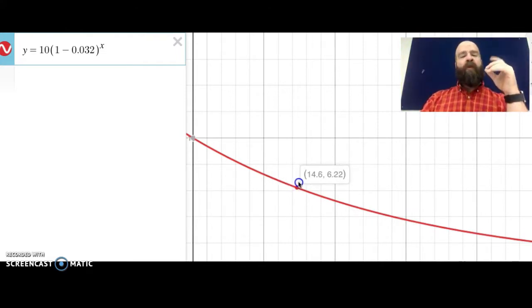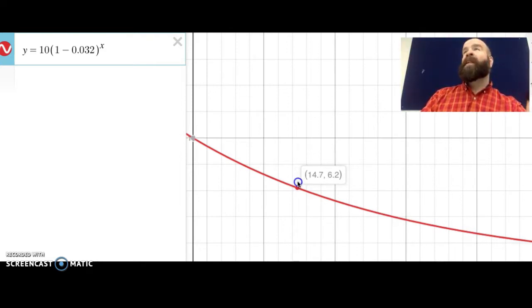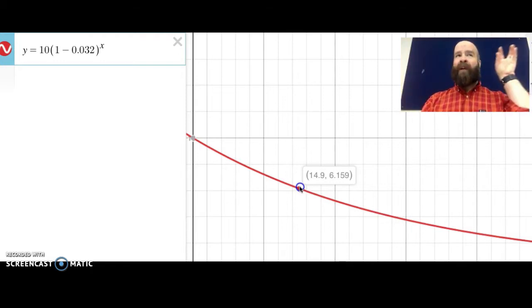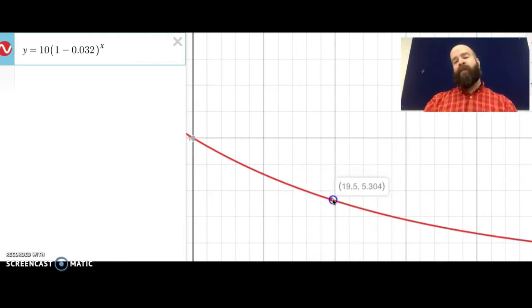So the first question asked us how many units would be left after 15 minutes. So we got something like 6.14. If I were to go to the graph and land on 15, I get 6.139, which is about 6.14, right? So the second part of this question asked, how long would it take for the insulin to get down to three units? So what I'm going to do is I want to know where the y value is three, because that's the number of units of insulin. So I'm going to drag along this graph until my y value gets down to three.